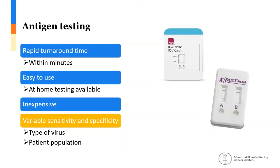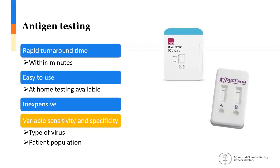Antigen tests — lateral flow assays — are convenient because they are quite fast, providing results within minutes. They are very easy to use, to the point where at-home testing is available, and they are cheap compared to other methods. However, there is variable sensitivity and specificity depending on the virus and the patient population. For example, flu antigen testing is known to have poor performance characteristics. RSV antigen testing performs well in pediatric patients but not as well in adults.